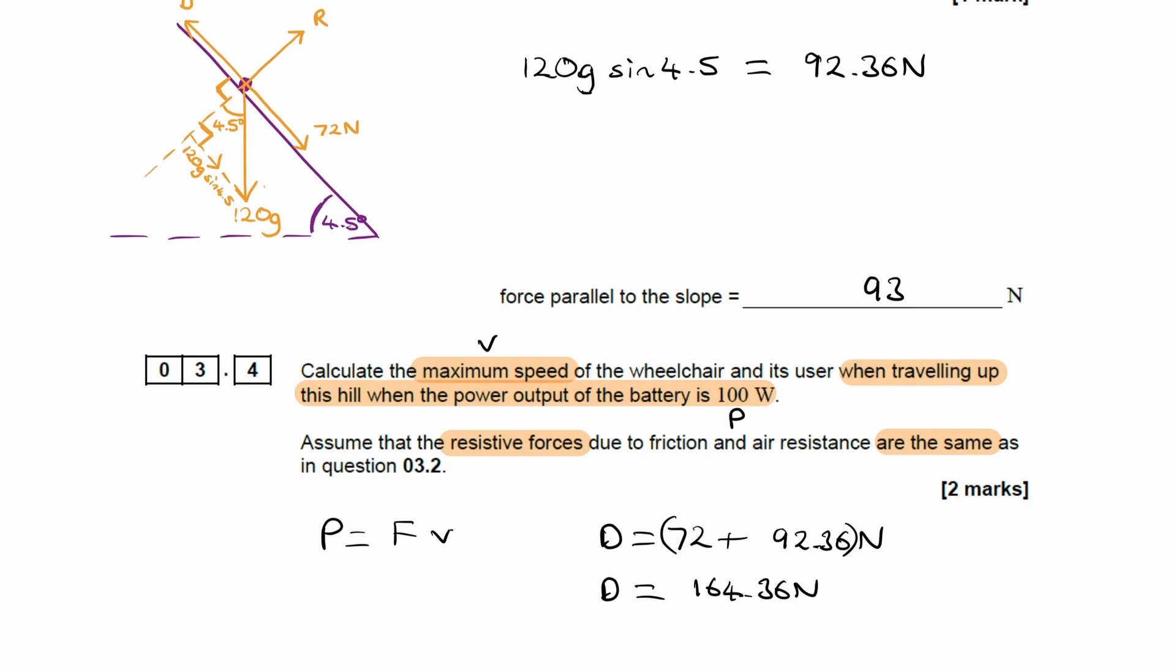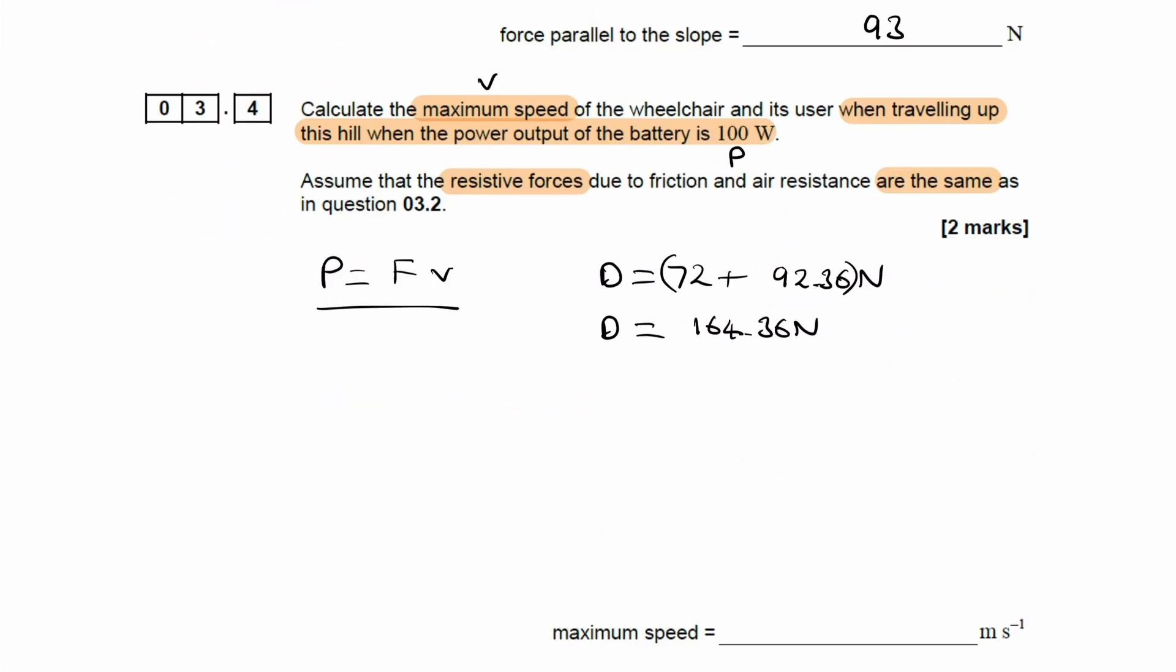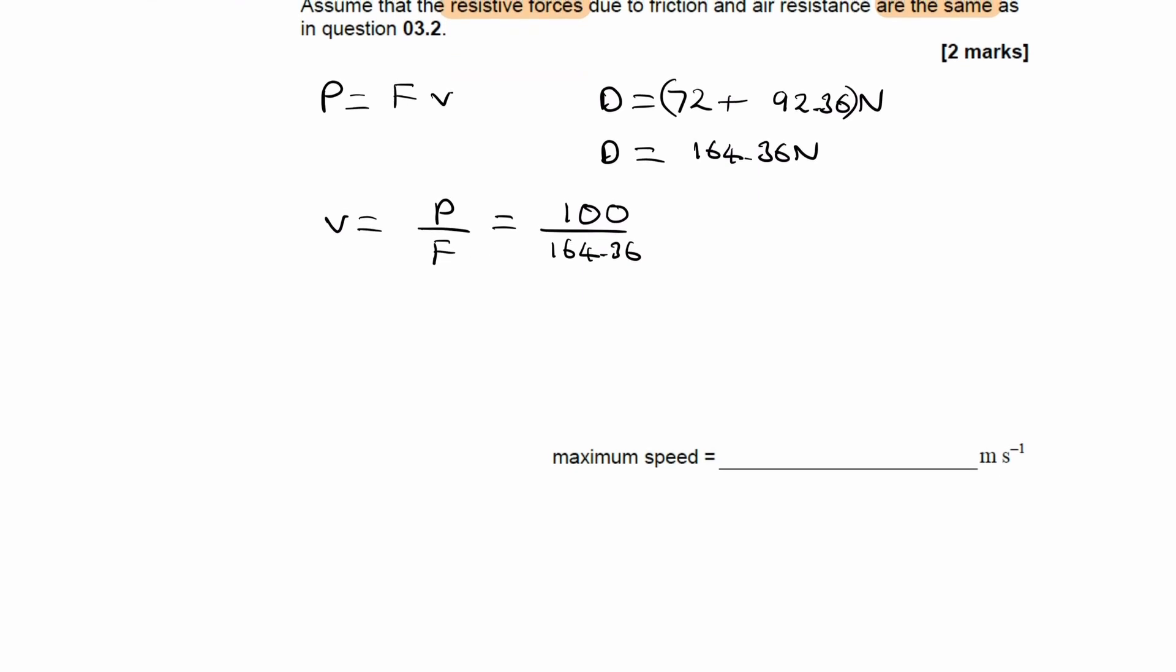That's our driving force, the F in this equation. Now we can rearrange for V. V equals power divided by F, which will be 100 divided by 164.36. That gives us a maximum speed of 0.608 or 0.61 meters per second.